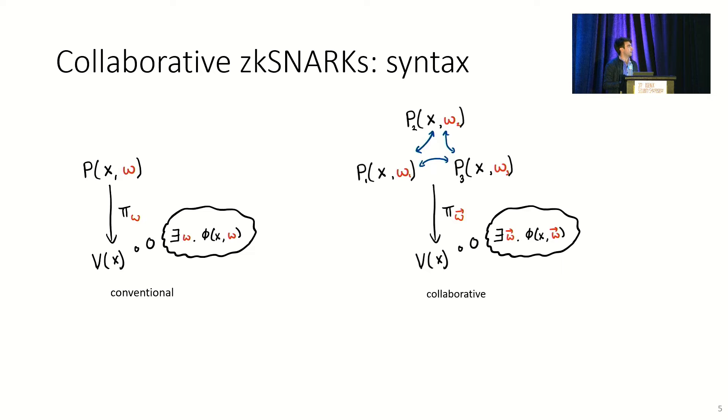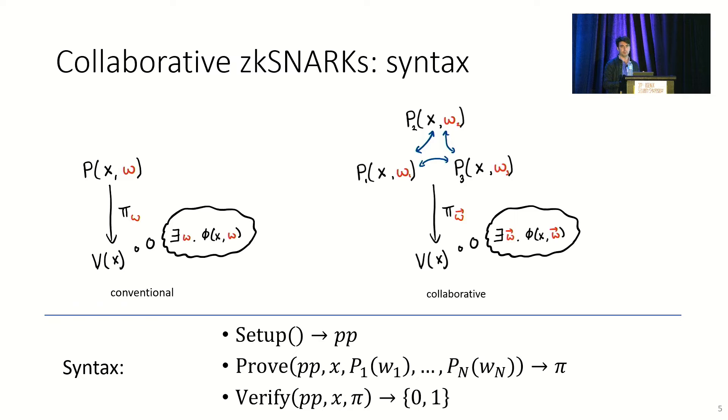All the provers have access to the public data, but they each have a different piece of secret data, W1, W2, and W3. The idea is that the different provers interact with one another in order to construct pi, a single, non-interactively verifiable proof that now shows some property about the vector of secrets. So syntactically, the generalization is not very substantial here. We're just moving from a proving process that's a local algorithm to one that is an interactive protocol among the different provers. So this is all that changes. Note, the output of the proving protocol is still the same. It's still a non-interactively verifiable proof.